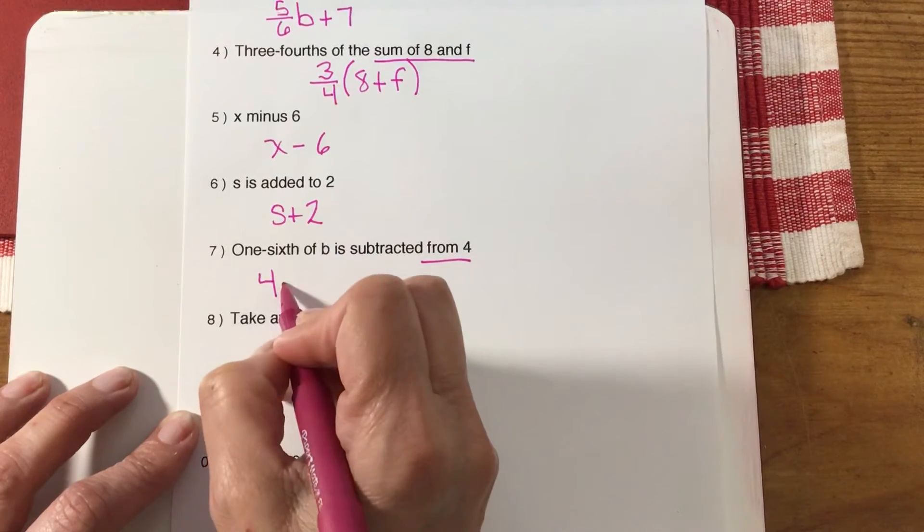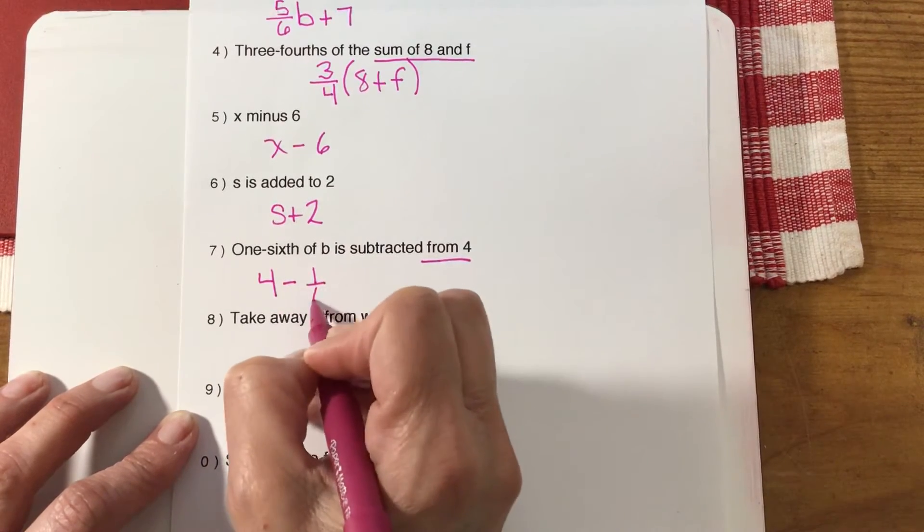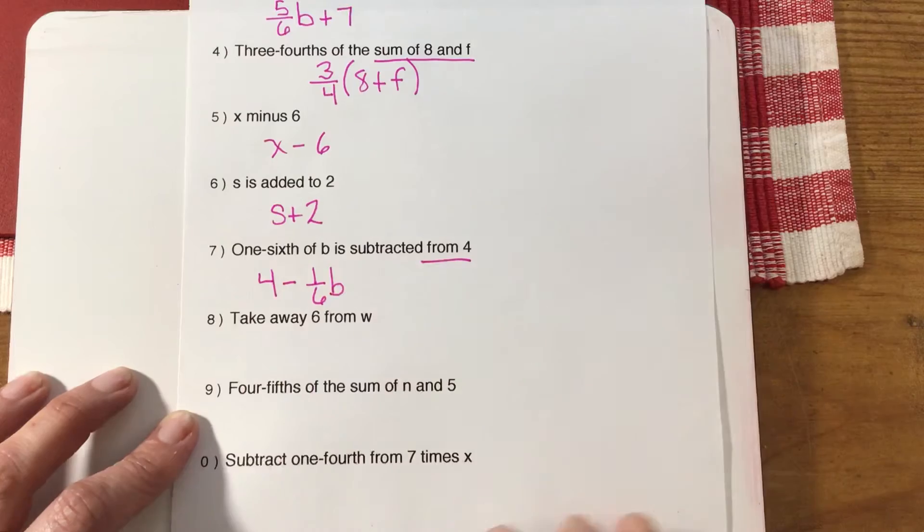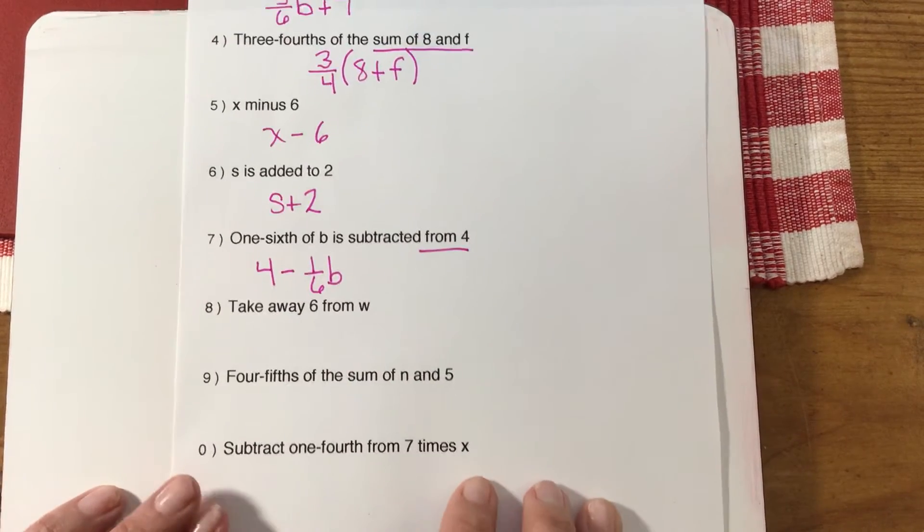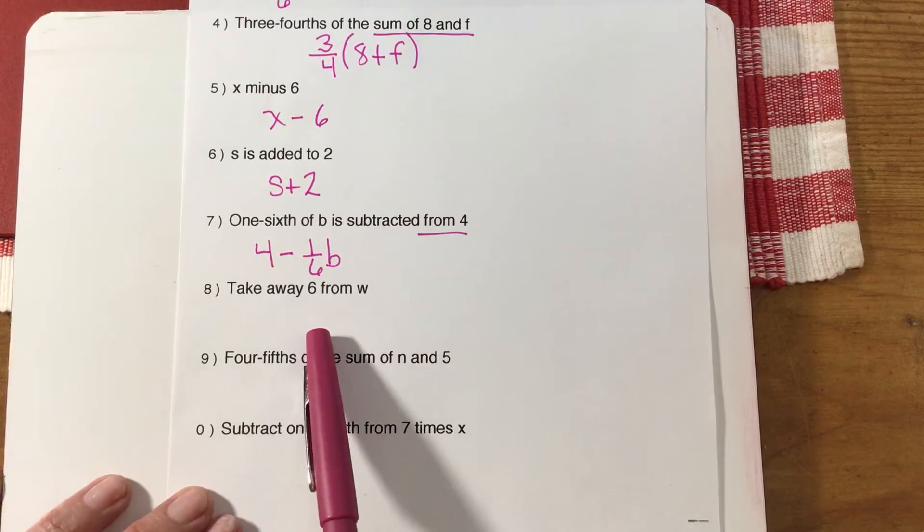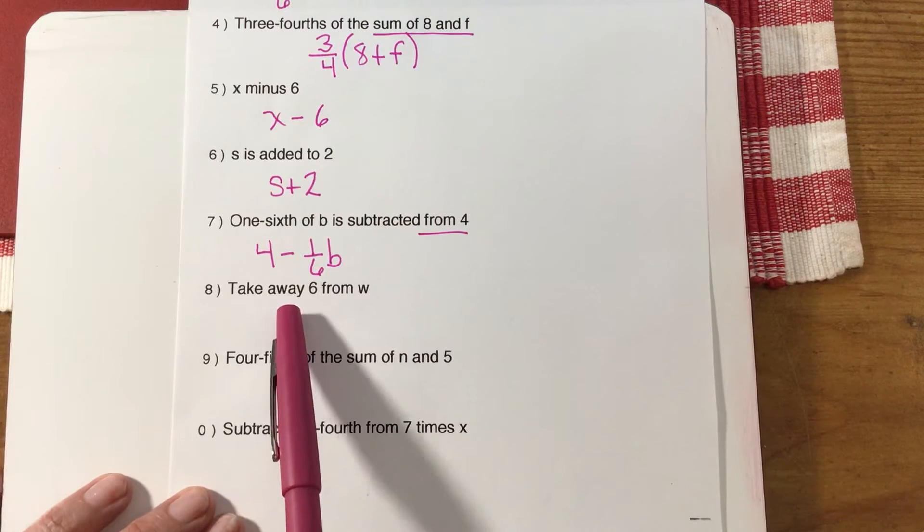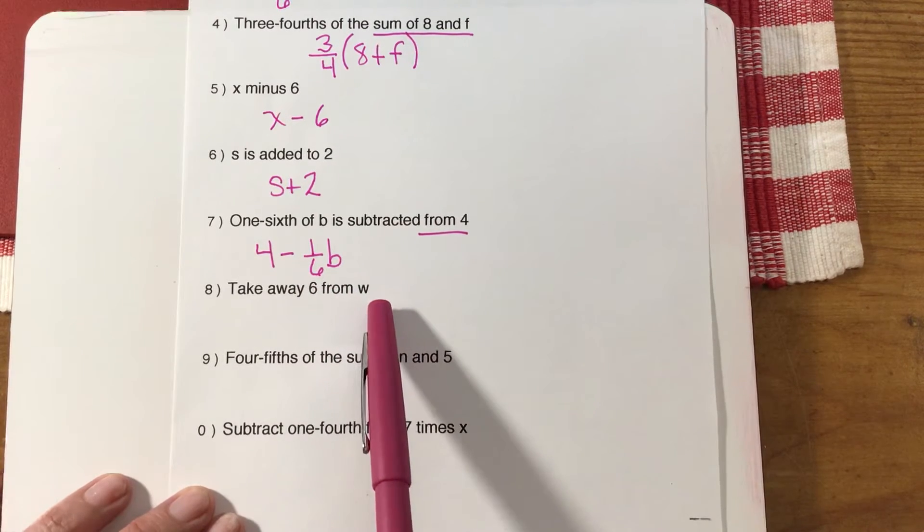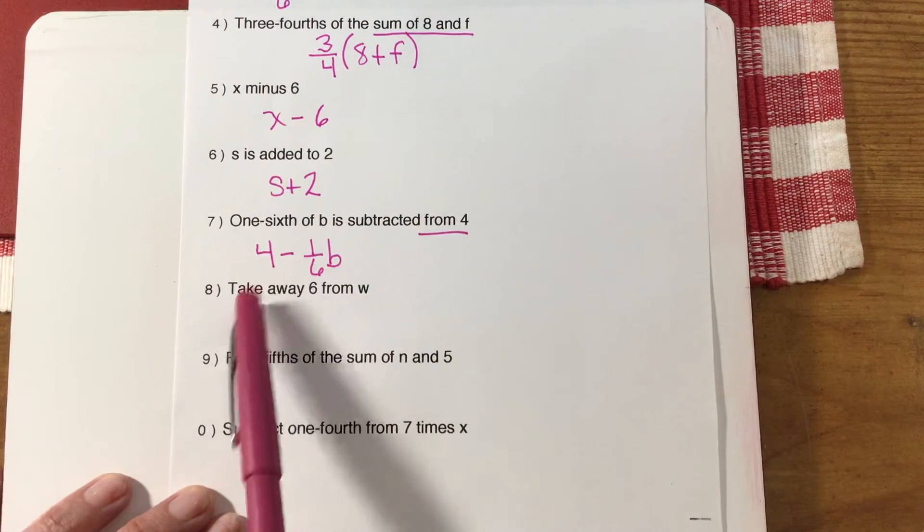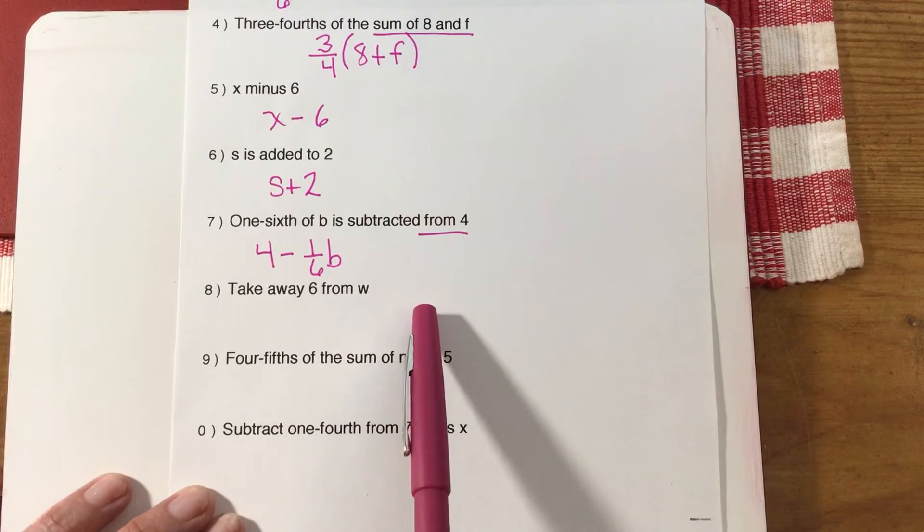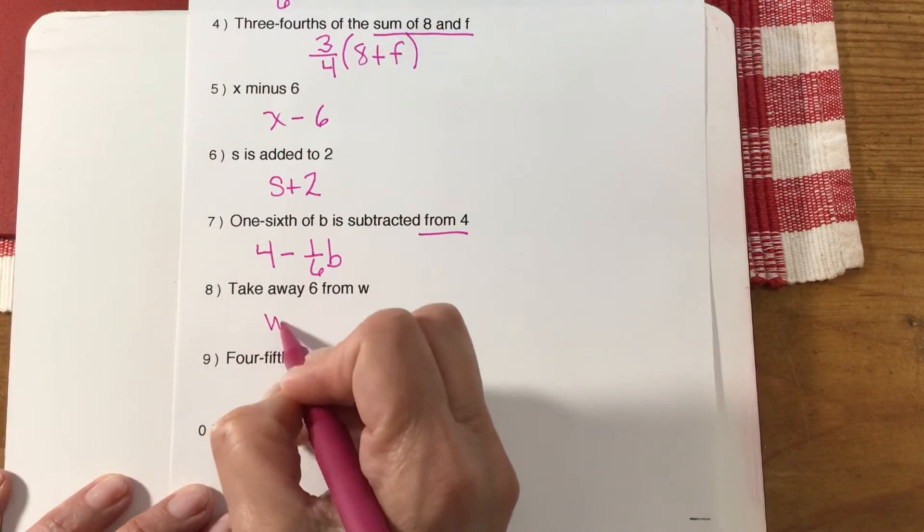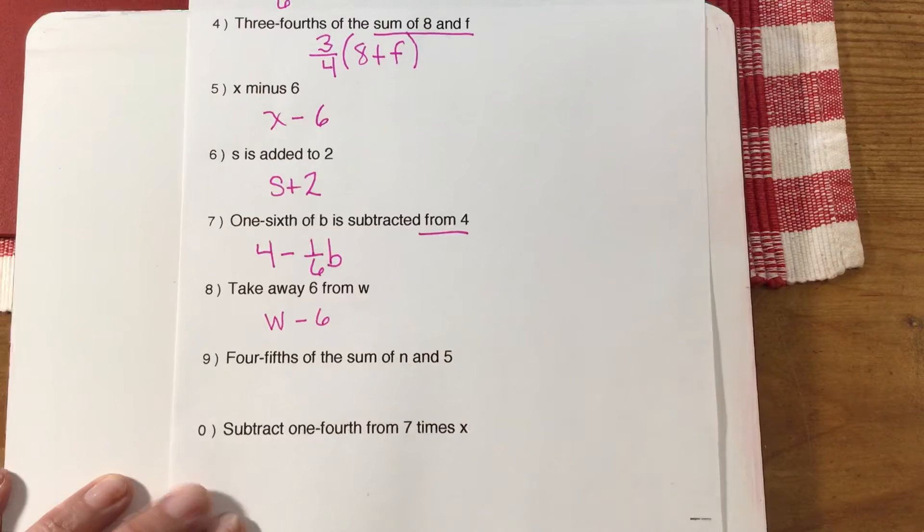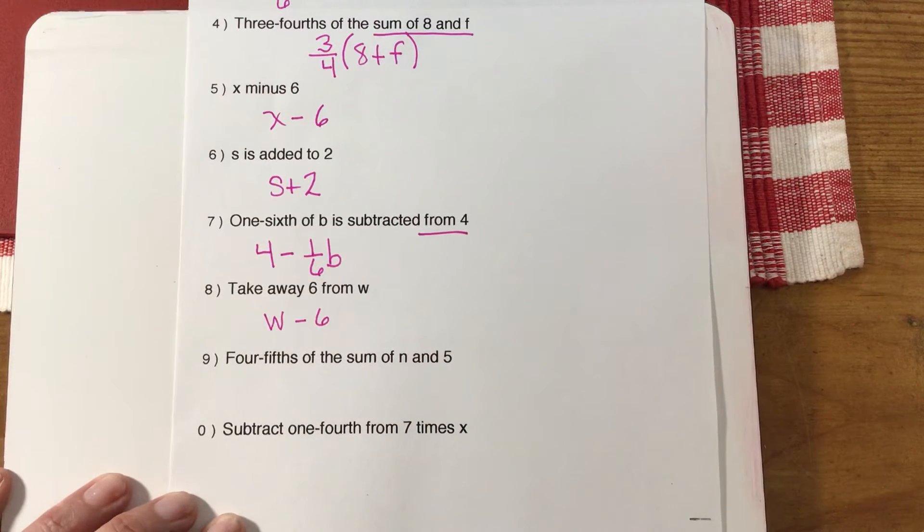Here's another one that's tricky. Take away—that means subtract—six from w. We don't want to take away w from six, so you have to put the w first, minus six, because we don't know the value of w but we have to take six away from that.